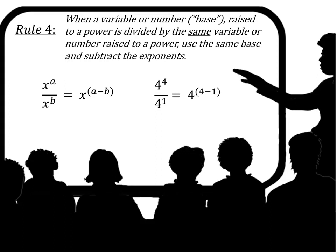In most cases you won't see a number or variable raised to the first power explicitly. When you see it all by itself, it is automatically assumed to be to the first power. So if you were to see 4 to the fourth divided by 4, you would know that it equals 4 to the third power.